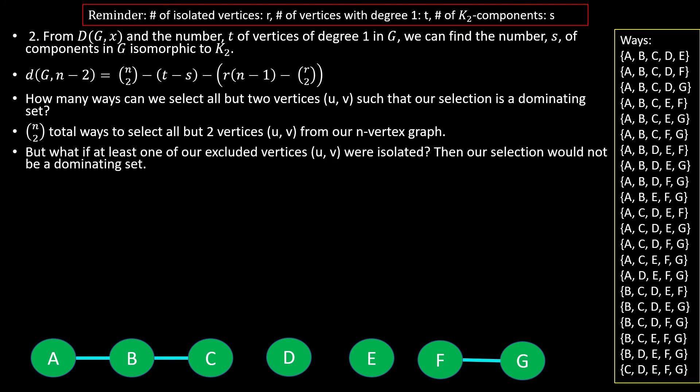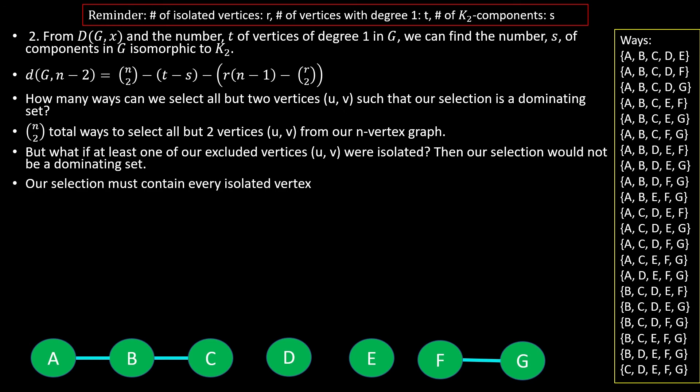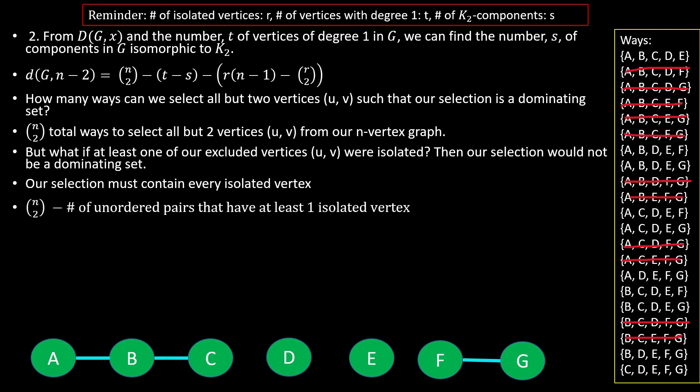But we can't just pick any two vertices to leave out of our selection. For example, if the two vertices we did not select were isolated, then no vertex in our selection would be adjacent to them, meaning our selection would not be a dominating set. In fact, if either of our two excluded vertices is isolated, we run into the same problem. So our selection has to contain all of the isolated vertices. Of all possible sets of two vertices we could exclude — of which there are n choose 2 — we must subtract the number of pairs with at least one isolated vertex.